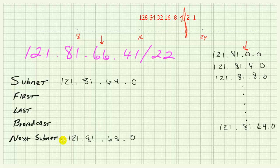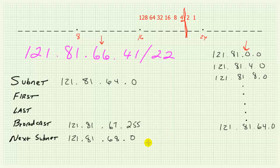If we know the current subnet and the next subnet, it's easy to figure out the broadcast address for the current subnet — it's the value of the next subnet with one subtracted from it. In our prior video 7A, I went through the long way using binary, showing how the subtraction carries ones all the way across. But if we do that subtraction, the broadcast will be 121.81.67.255.